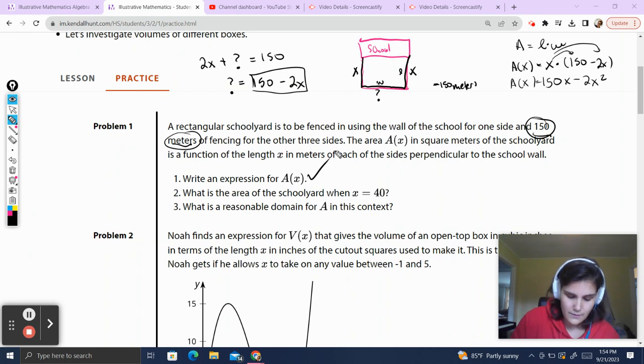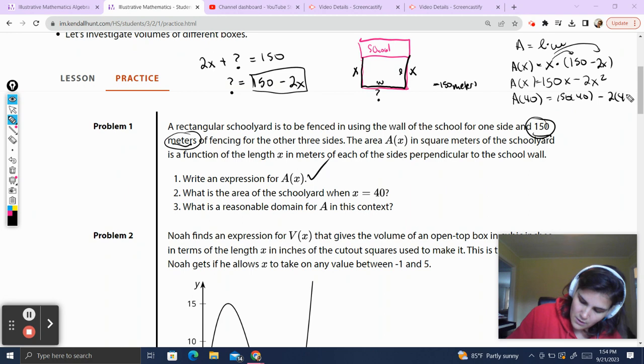Problem number two. What is the area of the schoolyard when x is 40? Well, that just means we want A(40), which is going to be 150 times 40 minus 2 times 40 squared. And this is when you pull out your handy-dandy calculators. You realize 150 times 40 is 6,000. We have 2 times 40 squared, which is going to be 1,600. 6,000 minus 3,200, because 2 times 16 is 32. Add the two zeros, we subtract, and we get 2,800. We go back to our question. We're talking about area. We're talking about meters, which means our units are meters squared.